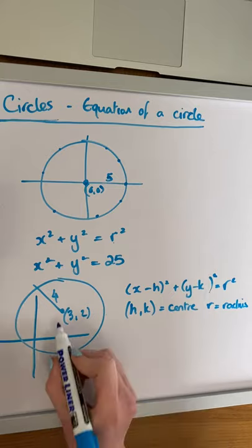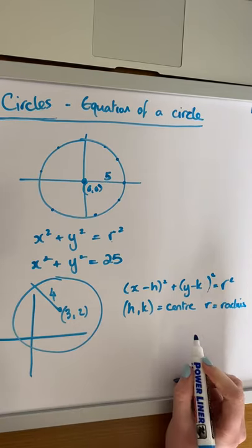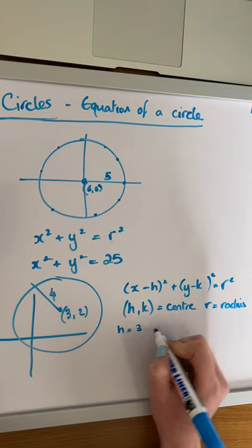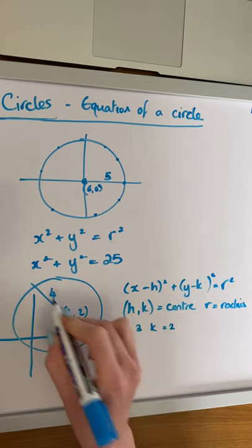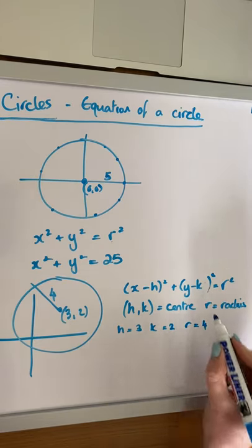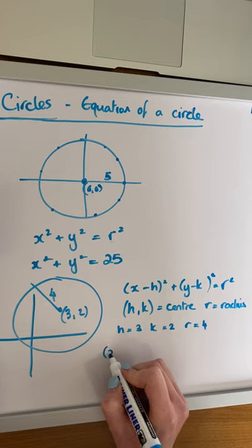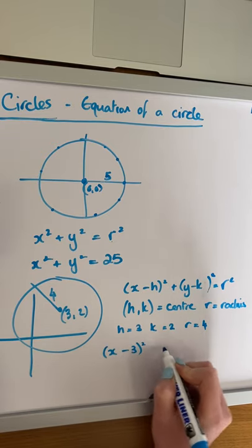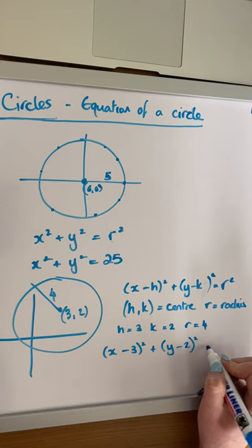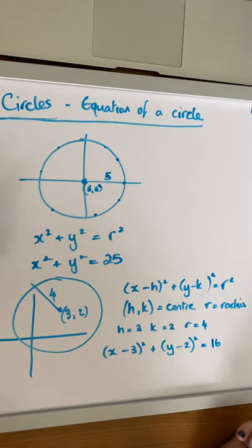Given the information in this diagram, we know that (3, 2) is the center of the circle. So h is equal to 3, k is equal to 2, and r is equal to 4. All we do is fill it into our circle equation: it's going to be x minus 3, all squared, plus y minus 2, all squared, equals 16 — r squared, which is 16.